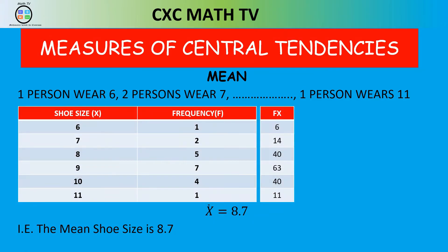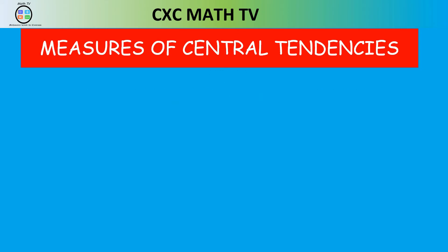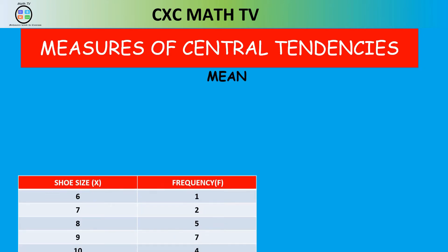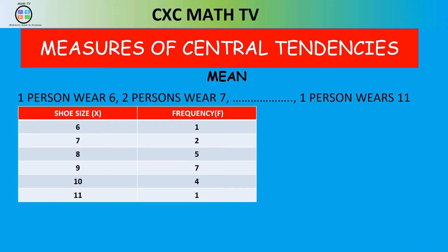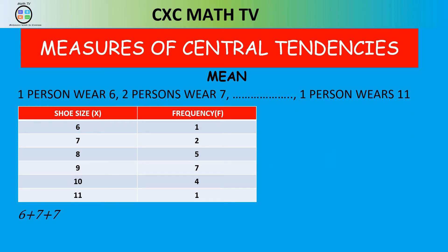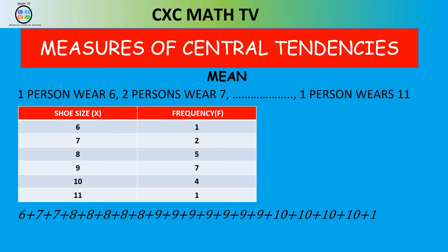To verify: if you list out all shoe sizes — one 6, two 7s, five 8s, seven 9s, four 10s, one 11 — and add them all up, you get 174. Divide by 20 and you still get 8.7. So the mean shoe size is 8.7.